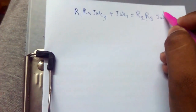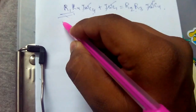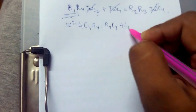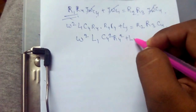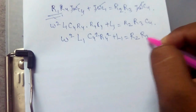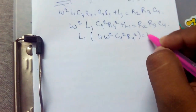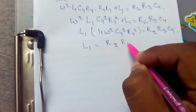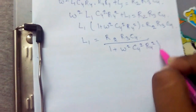J omega C4 is common in all terms, so J omega C4 gets cancelled. Substituting the value of R1, we get: omega squared L1 C4 R4 into R4 C4 plus L1 equals R2 R3 C4. Therefore omega squared L1 C4 squared R4 squared plus L1 equals R2 R3 C4. Taking L1 common: L1 times (1 plus omega squared C4 squared R4 squared) equals R2 R3 C4. Therefore L1 equals R2 R3 C4 divided by (1 plus omega squared C4 squared R4 squared).